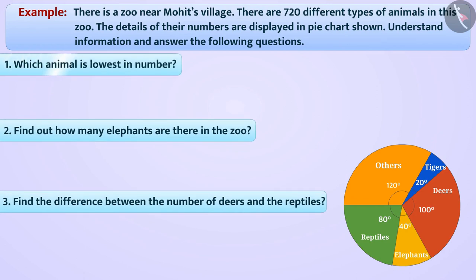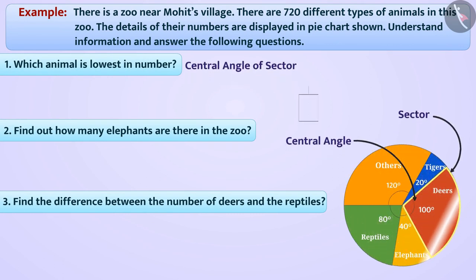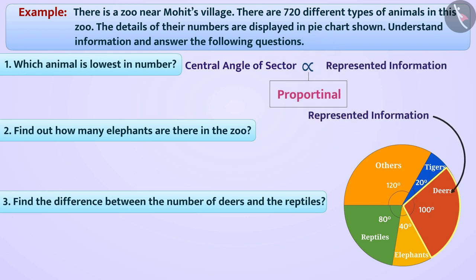Which animal is lowest in number? We know that the central angle of each sector in a pie chart is proportional to the information it represents.